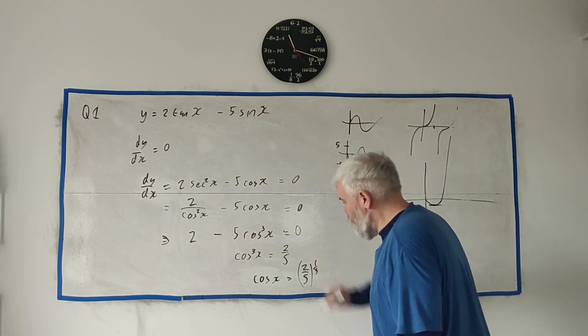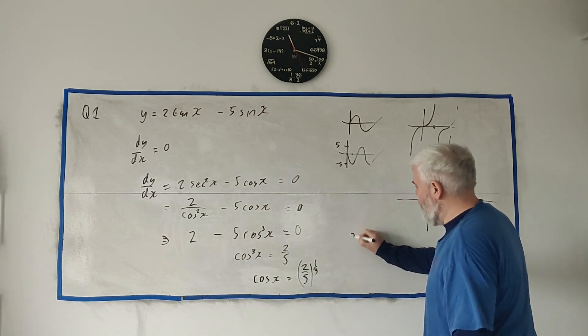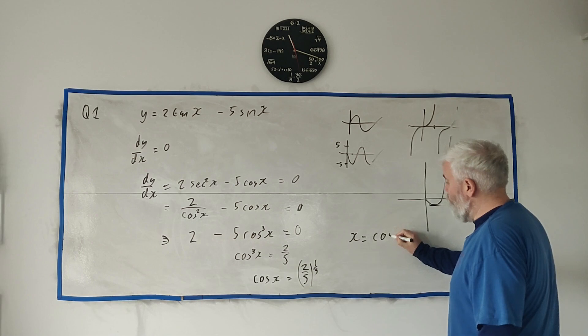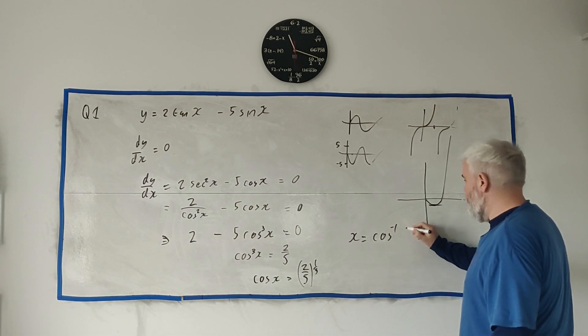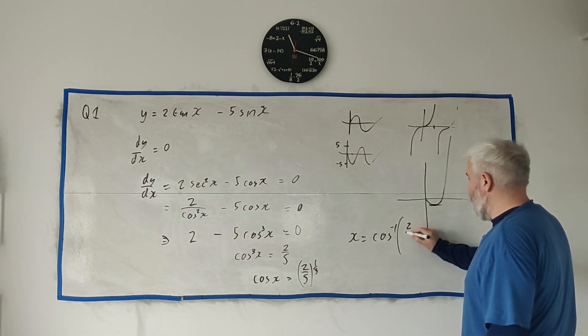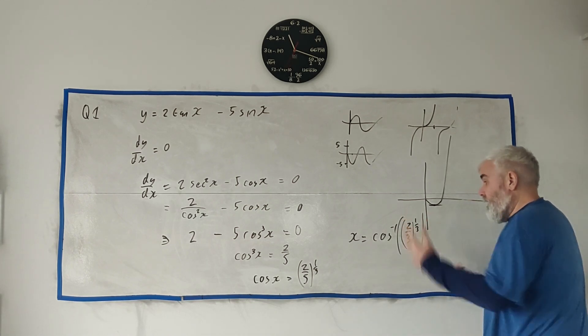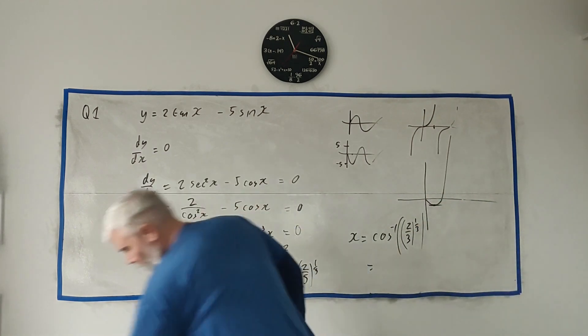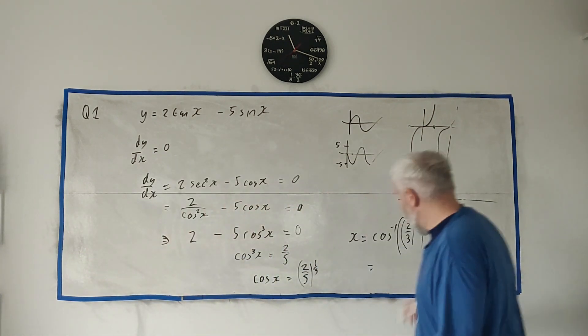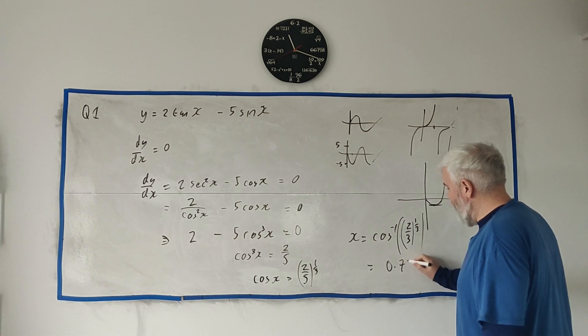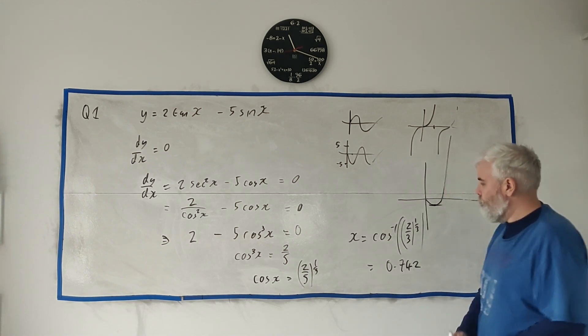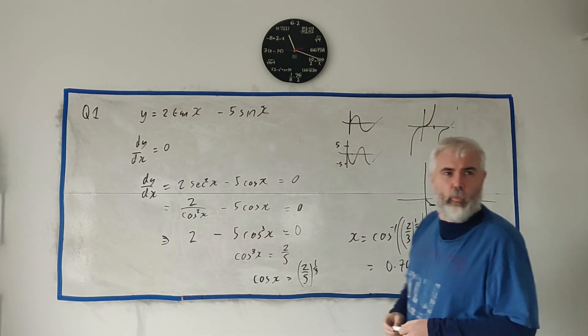And finally, just find x by getting the inverse cosine of both sides. So that's the inverse cosine of 2/3—let's put an extra bracket in. Help calculator. And that's it. That all goes into your calculator and comes out as 0.742. And they didn't ask for the y part, I believe. Okay, that's it for question one.